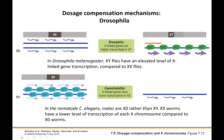In Drosophila, if we have an XX individual — remember individuals with two Xs in Drosophila are female — they express their X chromosomes at normal levels. In males, where they only have one X chromosome, they actually double the transcription rate of their genes on that X chromosome. So they compensate by expressing those X-linked genes more.